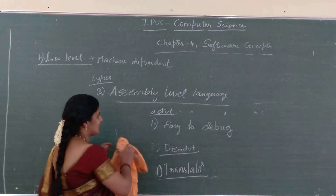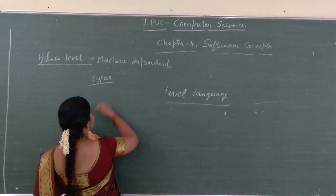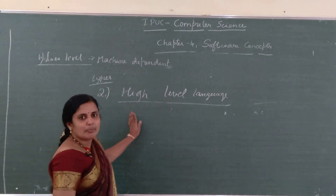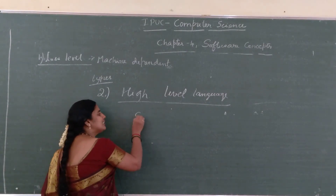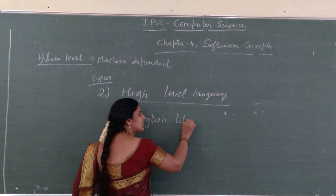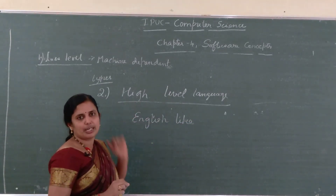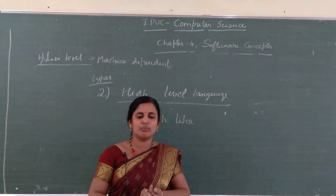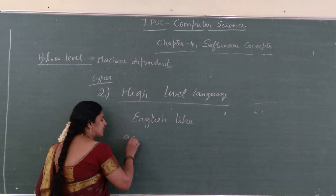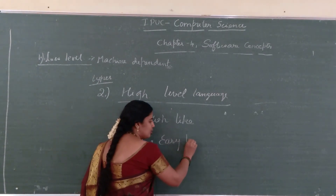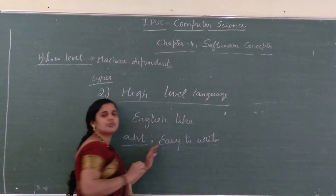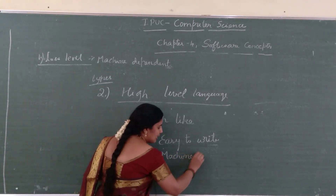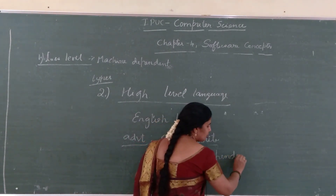Next we will move on to high level languages. High level language is written using an English-like language — for example, C, C++, Java. In these languages we use English-like language to write programs. So the advantage is that it is easy to write a program, because it is written using an English-like language. Another advantage of high level languages is that if I create a program in my system, I can also execute it in another system.